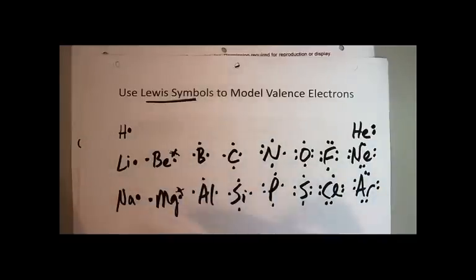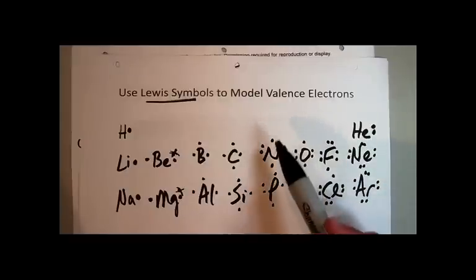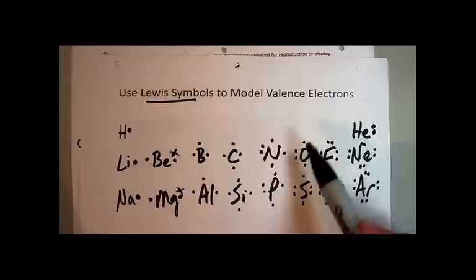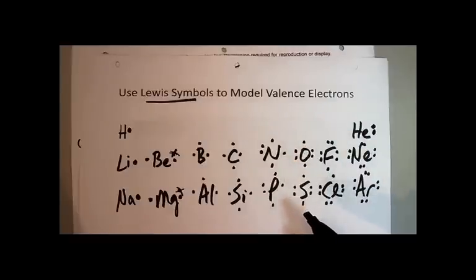You can see how the repetitive nature of the Lewis structures is telling me the outer electrons—the number of electrons on the surface of these elements—is consistent down the groups. That's why within a group we have similar chemical behavior and similar bonding behavior.